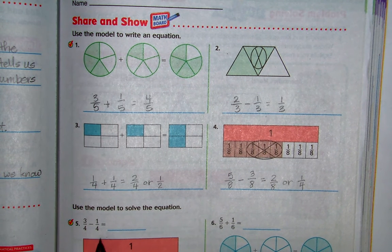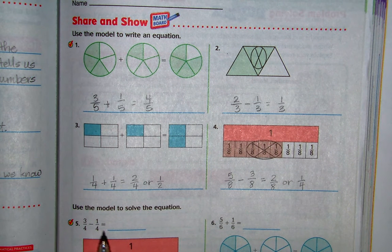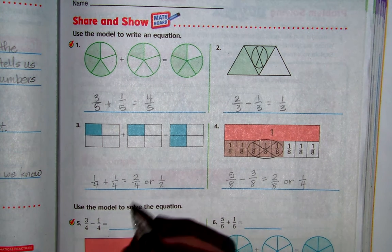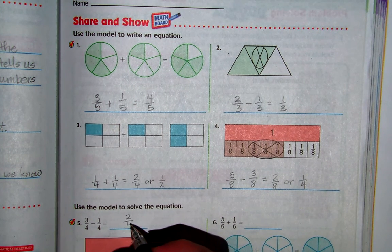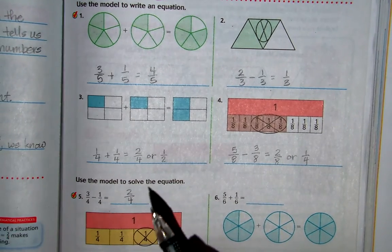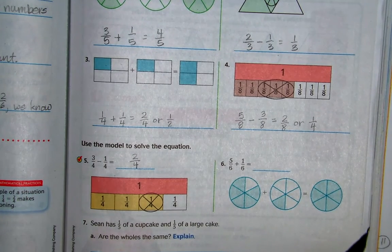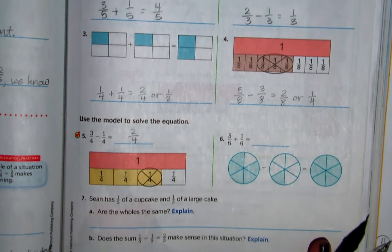Use the model to solve the equation. 3 fourths minus 1 fourth equals 2 fourths. And remember, you can just say 3 minus 1 equals 2. As long as those denominators are the same. Remember, we never add nor subtract the denominators in fractions.